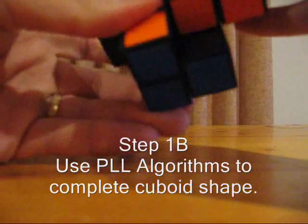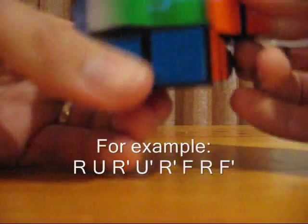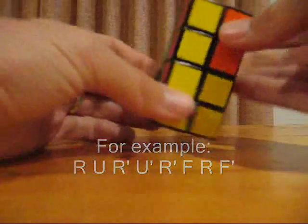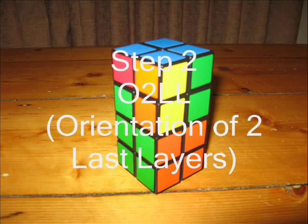In step 1b, we will need to orient the utmost layers by using last layer orientation algorithms that every Rubik's Cuber knows. Use the ones that you're comfortable with. In this tutorial, we'll be using common two-look OLL algorithms.